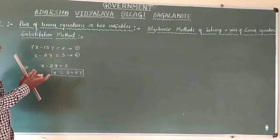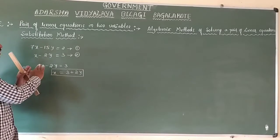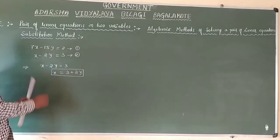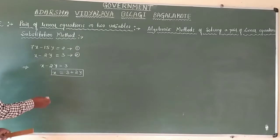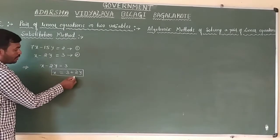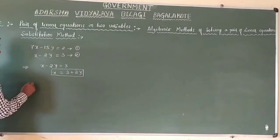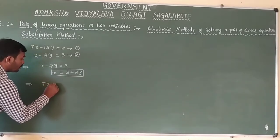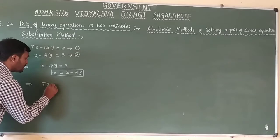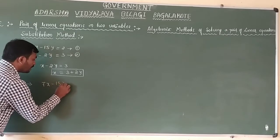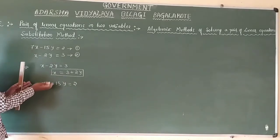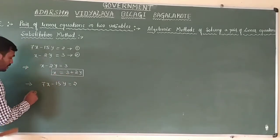We got the value of variable x from the second equation. Now we substitute this into the first equation — that is what the substitution method is. Let us take equation number 1, which is 7x minus 15y equals 2, and substitute the value of x into this equation.